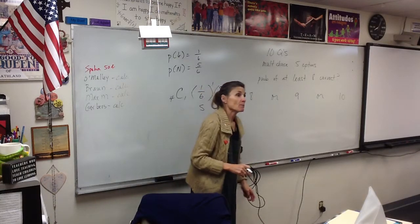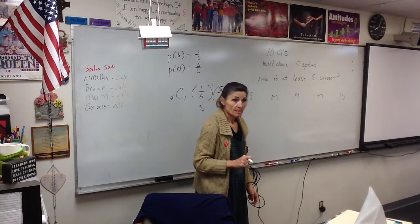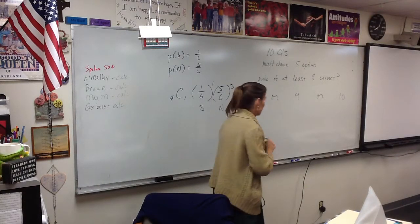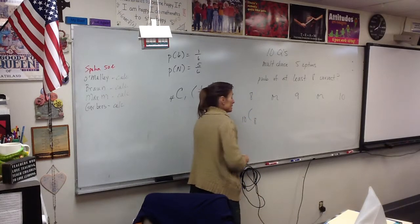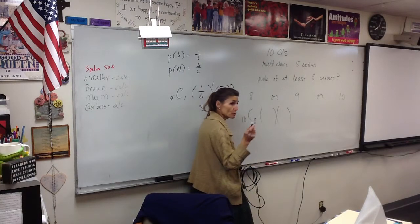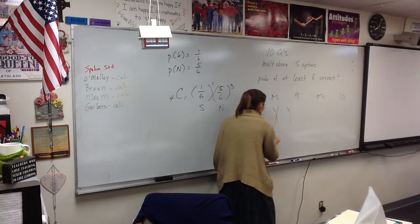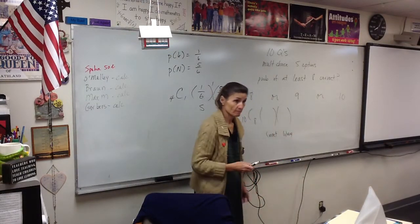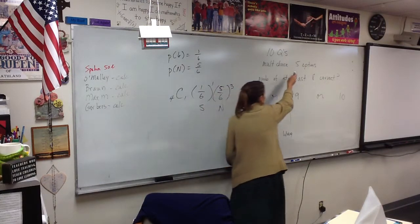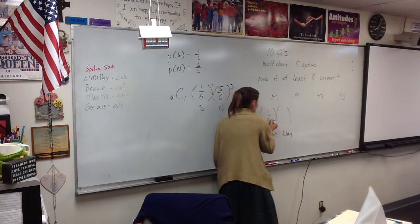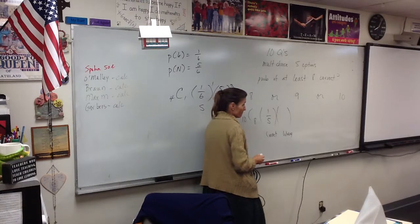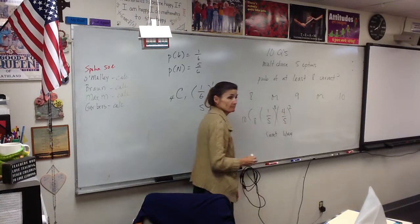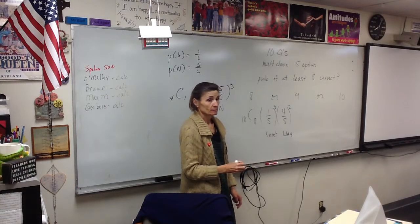Let's start with getting eight right. How many questions are there? Ten. I'm picking eight to get right. Do I care which eight? That's 10C8. There are two probabilities associated with that — either I'm going to be correct or I'm going to be wrong. What's the probability I'll get it right if there are five options? One fifth. What's the probability I'll get it wrong? Four fifths. For eight correct, I want eight corrects and two wrongs.